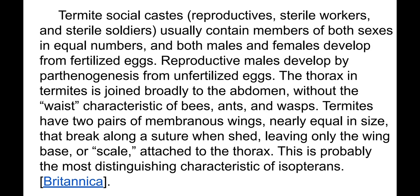Reproductive males develop by parthenogenesis from unfertilized eggs. The thorax in termites is joined broadly to the abdomen without the waist characteristic of bees, ants, and wasps. Termites have two pairs of membranous veins — in the reproductives — nearly equal in size, that break along the suture when shed, leaving only the vein base or scale attached to the thorax. This is probably the most distinguishing characteristic of isopterans — the termites.